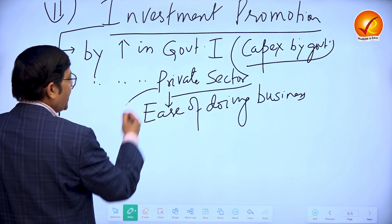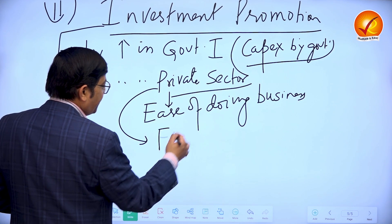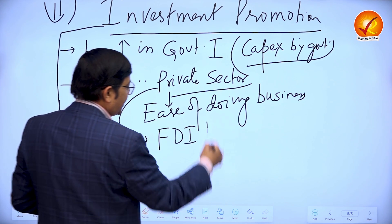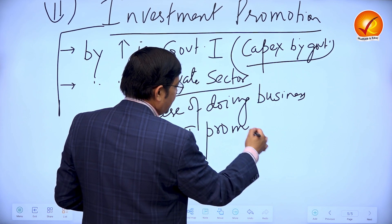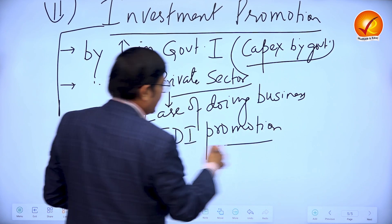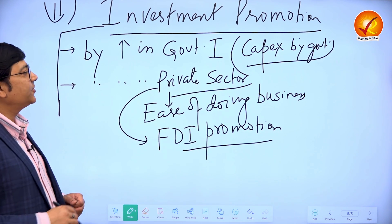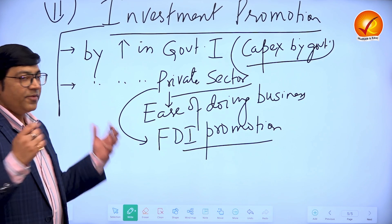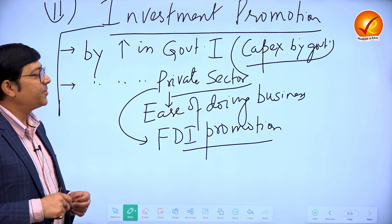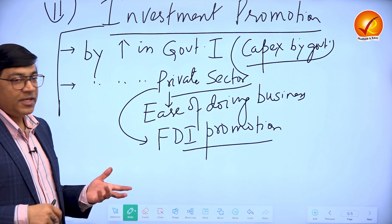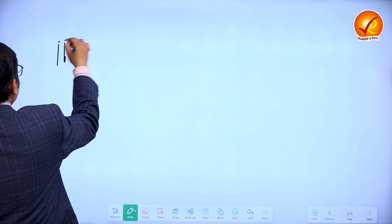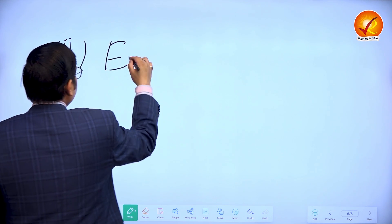In a similar manner, one can talk about FDI promotion, the foreign direct investment promotion. That can also be an investment promoting measure and so on. And in a similar way, one can talk about other investment promoting measures. What else? One step that can be taken to increase actual to potential is export promotion.